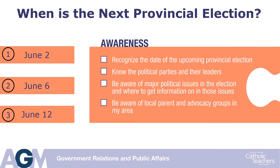One of the puzzle pieces is awareness. There are many different things you can do to make yourself more aware about the upcoming election, including what is the next provincial election date. Is it June 2nd? Is it June 6th? Or June 12th? For that information and a lot of other information, visit www.elections.on.ca, and you'll get all sorts of information to help you become aware.